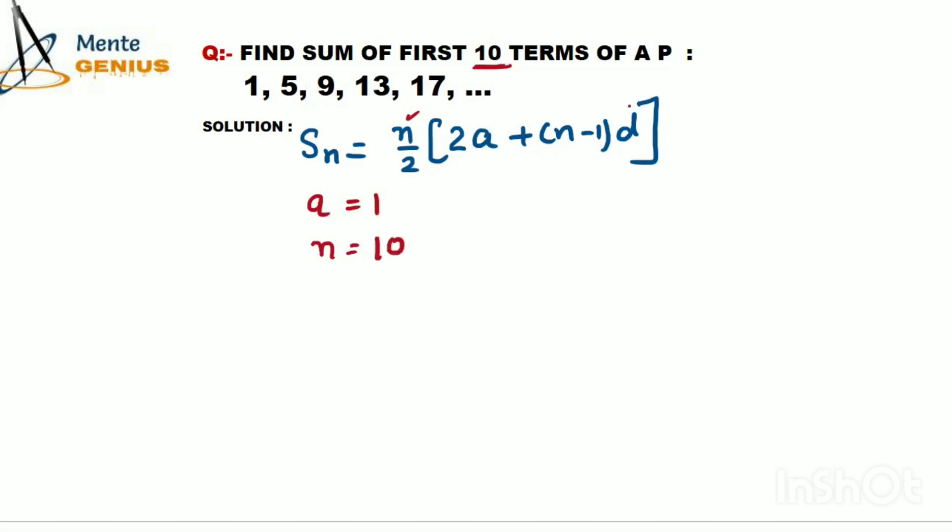Then d - what is d? d is the difference. The first term is 1 and the second term is 5, so we will check the difference between them. Second term minus first term gives us 4. See, 1+4=5, 5+4=9, so our difference is 4.